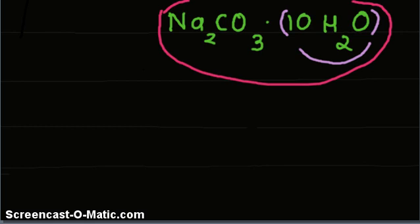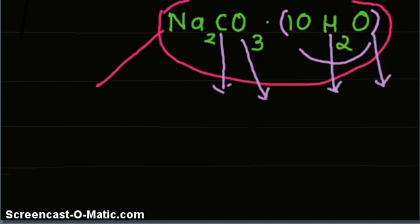So we have sodium atomic mass, then carbon atomic mass, then oxygen atomic mass, then we have hydrogen and again oxygen.